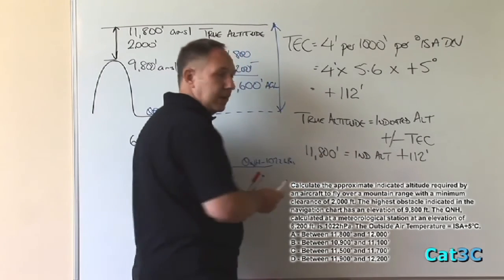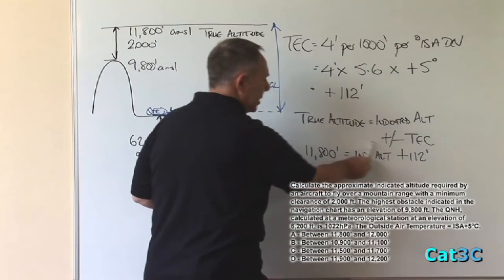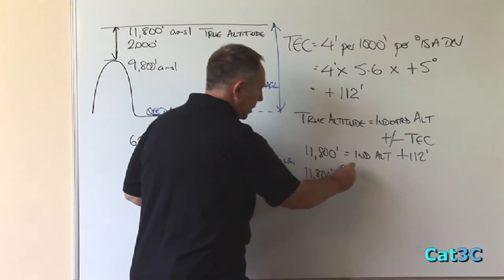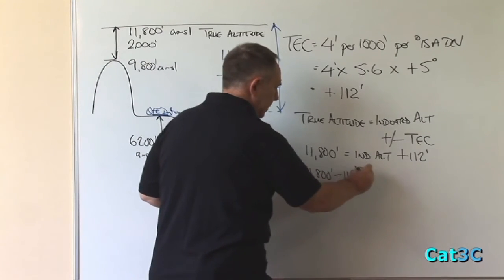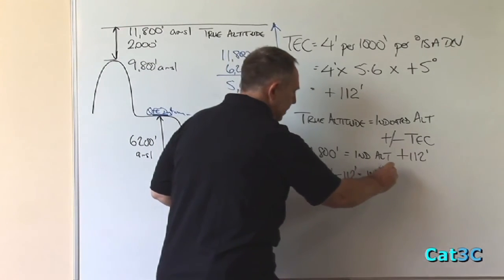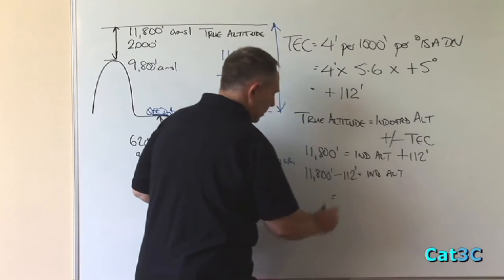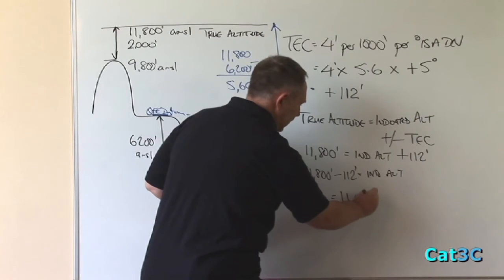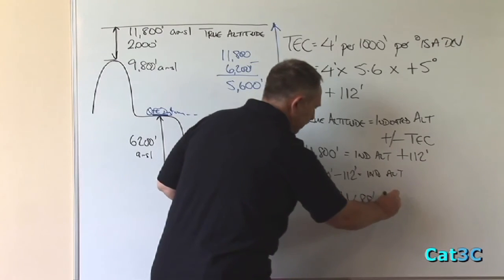If you change sides of the equal sign, then you change signs. So that would become 11,800 minus 112 feet equals indicated altitude equals 11,688 feet above mean sea level.